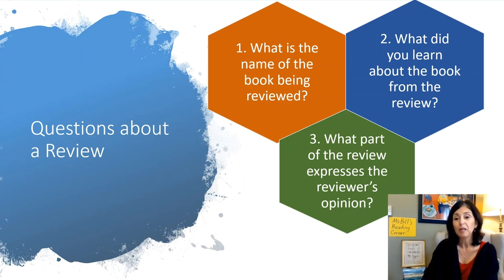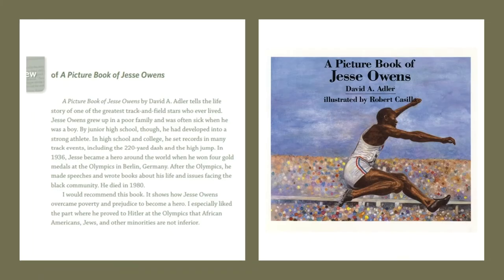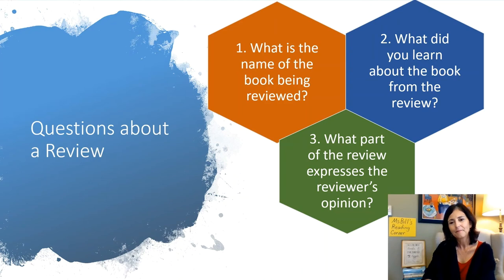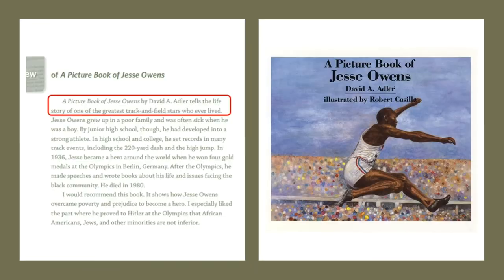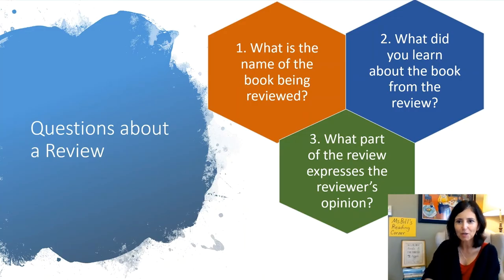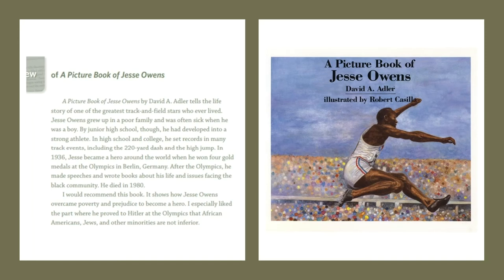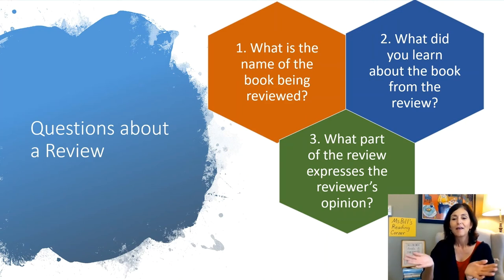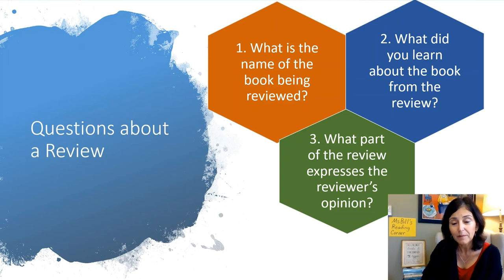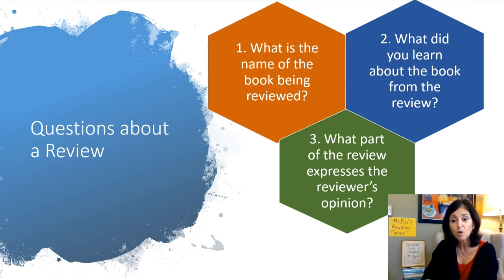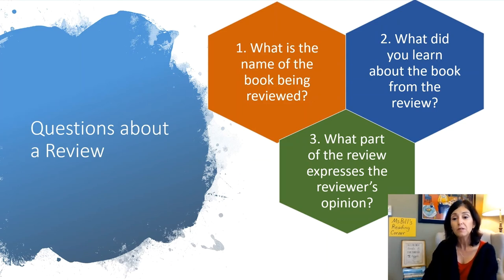Now that you've finished reading the review, I have some questions for you. The first question is: what is the name of the book being reviewed? The name of the book is 'A Picture Book of Jesse Owens.' Second question: what did you learn about the book from the review? You may have said that when Jesse was a little boy he was very sickly, but he became an athlete and grew up to become a track and field star. He even went on to win four gold medals in the Berlin Olympics. After the Olympics, he went on to give speeches and write books about issues facing people in the Black community.